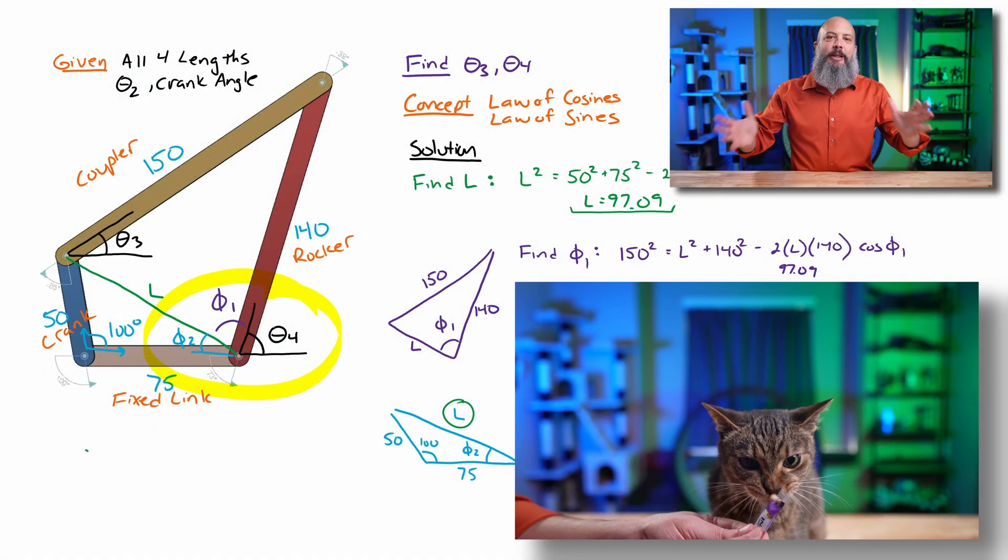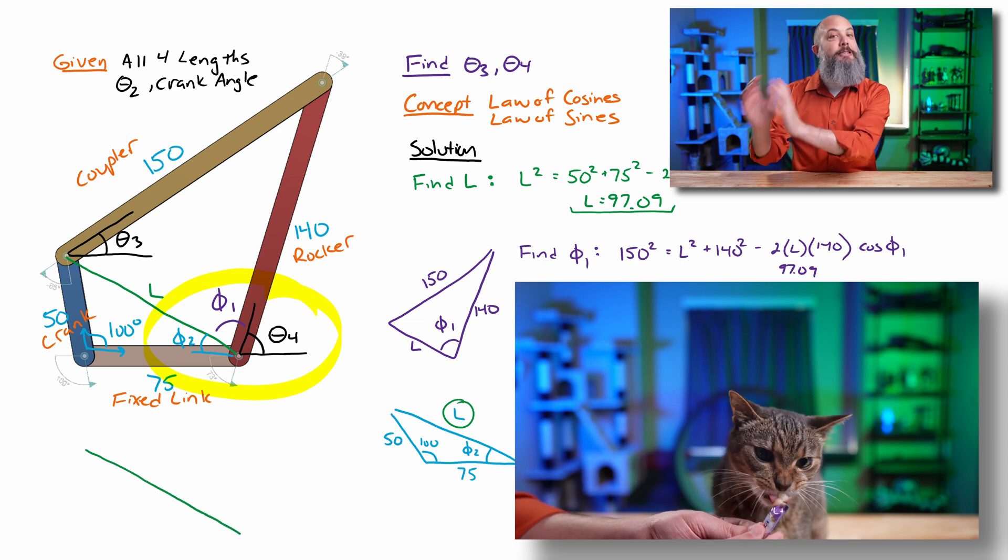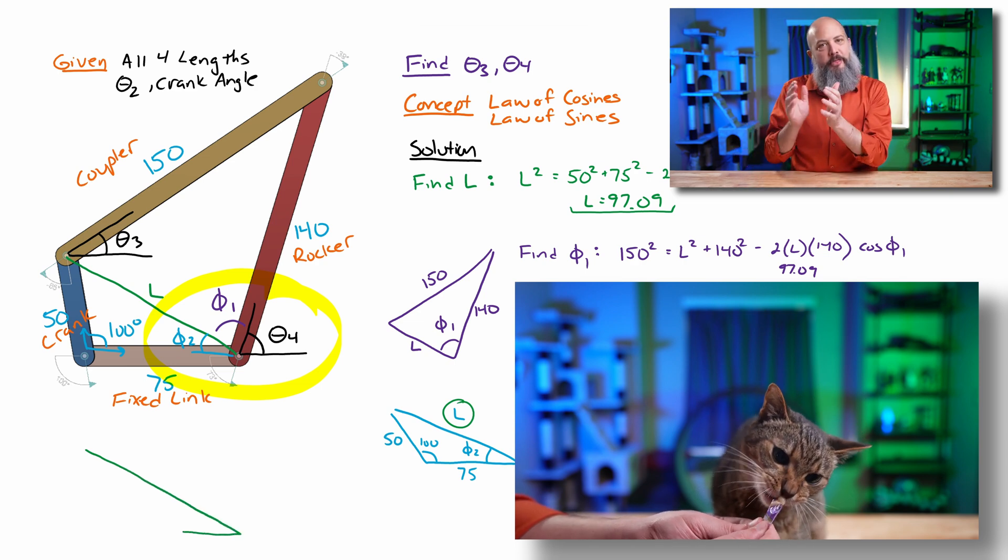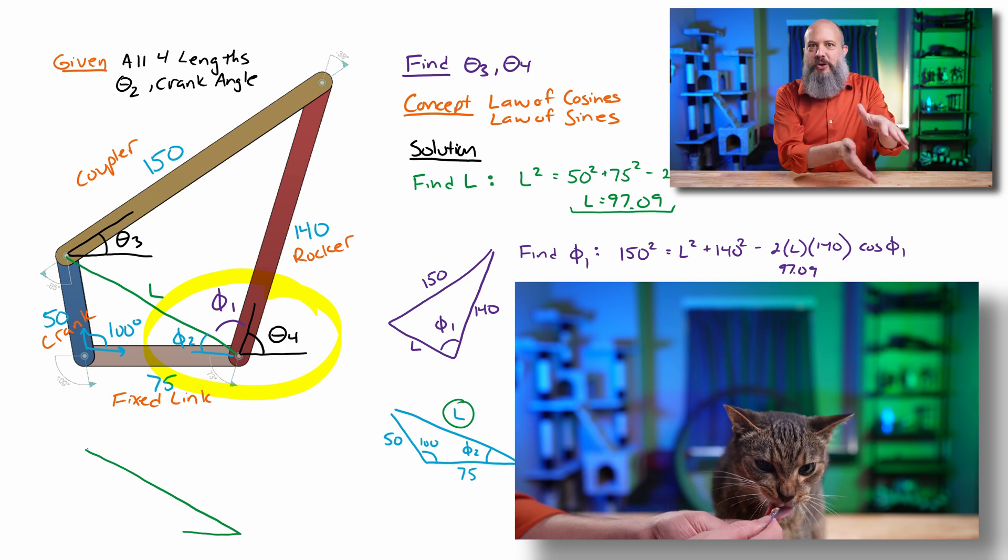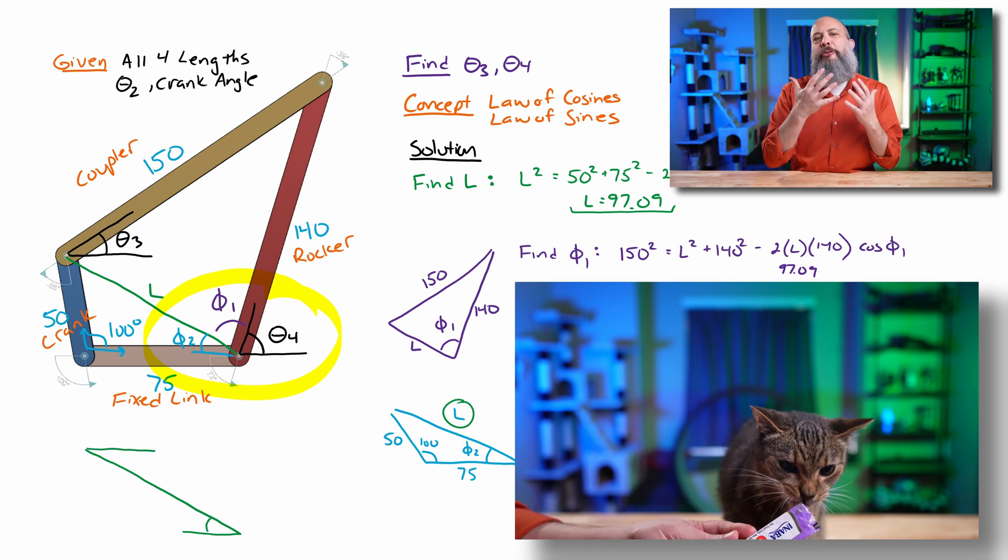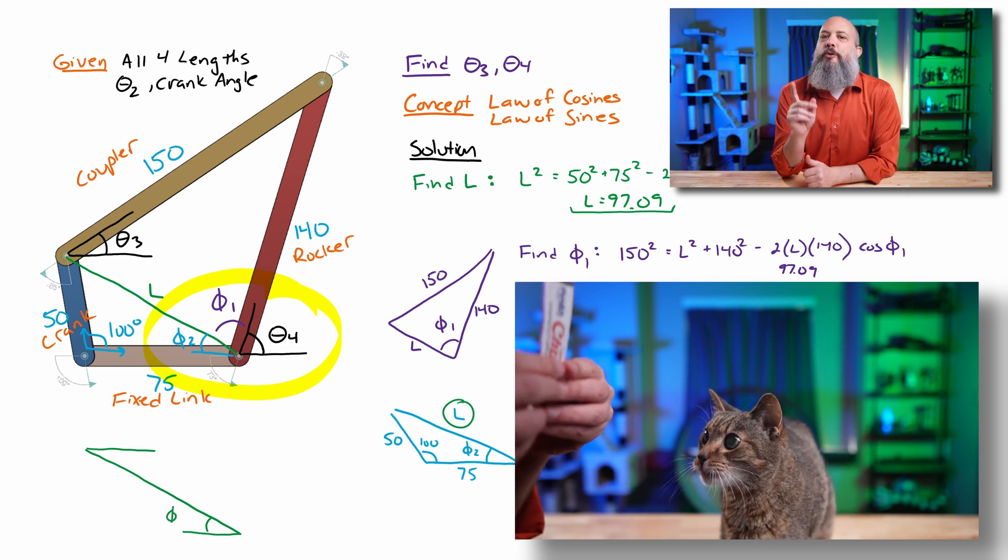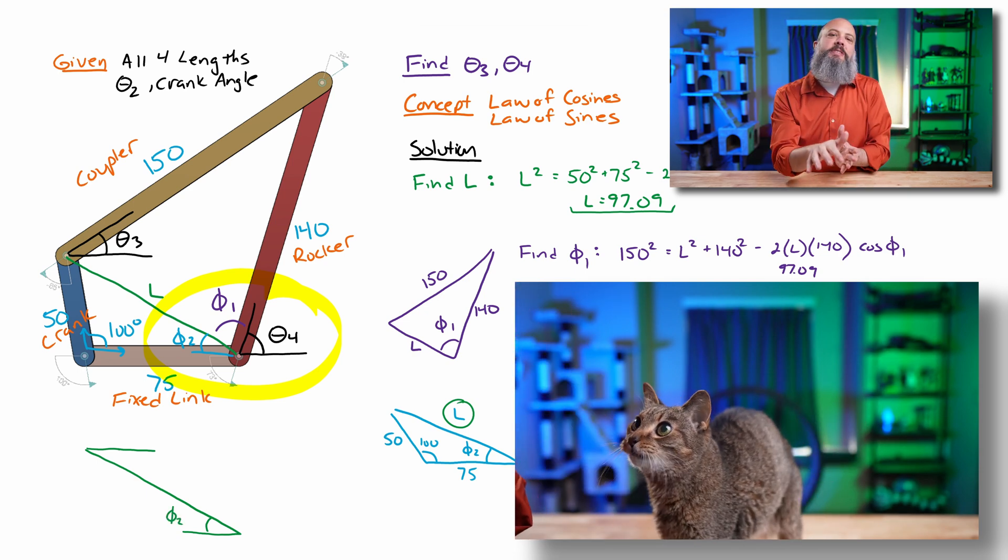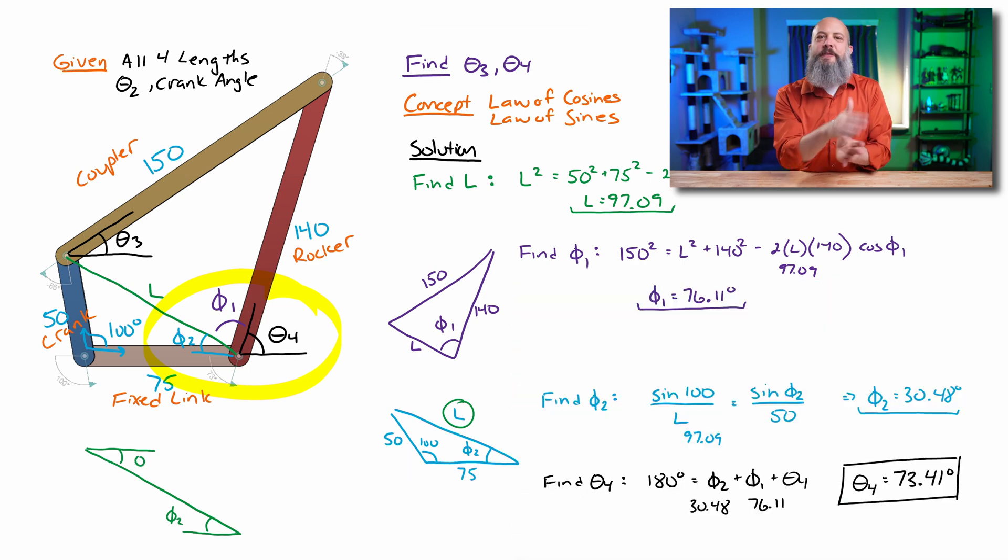Spatially and visually, theta 4 is definitely the easier of these two to find than theta 3. Splitting this up into two triangles and solving for angles, that's kind of straightforward. Theta 3 is the one that students usually struggle with more, and so I'm making a drawing down here off to the side to help sort of illustrate how we're going to find each of these angles.